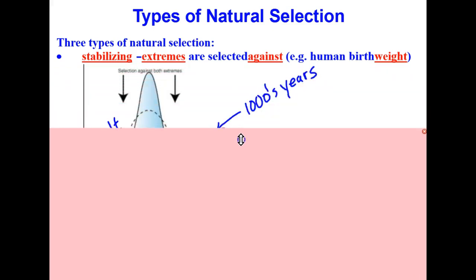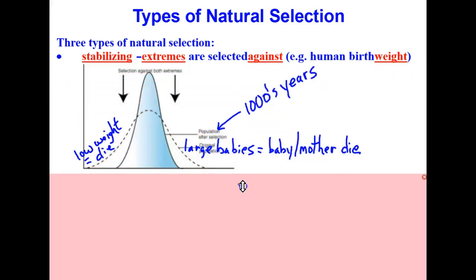A great example of this is human birth weight before the use of cesarean section became so common. The dotted line here represents the original population of babies born by humans. Well, over time both extremes became selected against.